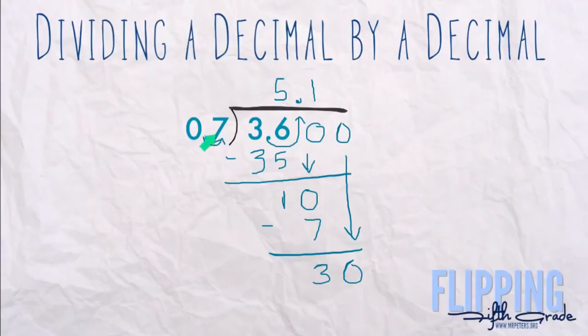Now we ask ourselves how many times does 7 go into 30? Well, 7 goes into 30 four times, the answer is 28. At that point we can kind of stop because we have an answer of 5.14 which is close to the actual answer.